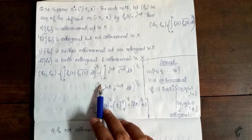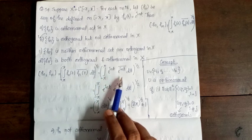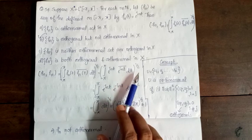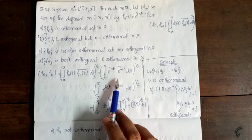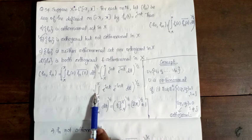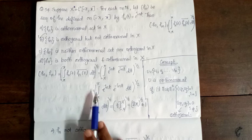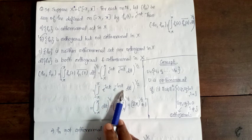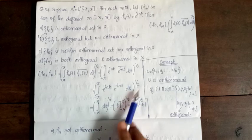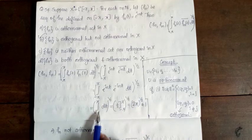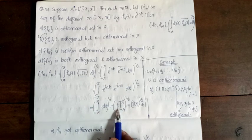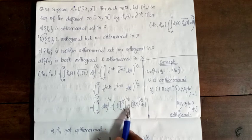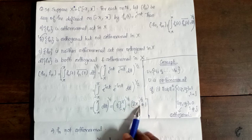That equals integral from −π to π of e^(int) · e^(−int) dt = integral from −π to π dt = [t] from −π to π = 2π. Since 2π ≠ 1, the first orthonormality condition is violated.